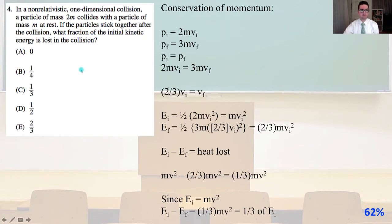Number four. In a non-relativistic one-dimensional collision, a particle of mass 2m collides with a particle of mass m at rest. If the particles stick together after the collision, what fraction of the initial kinetic energy is lost in the collision?